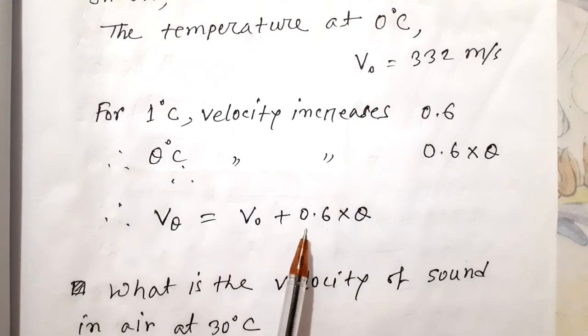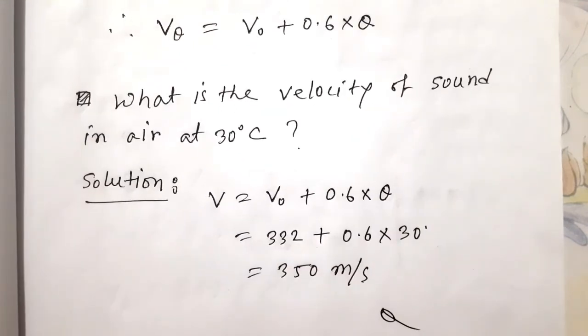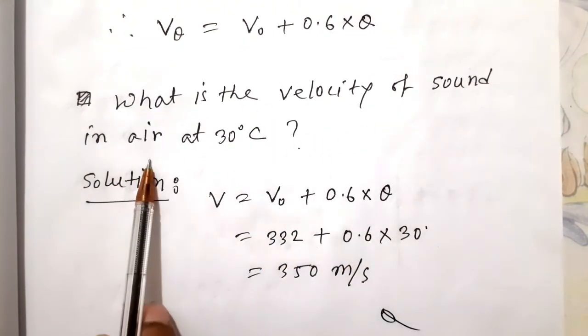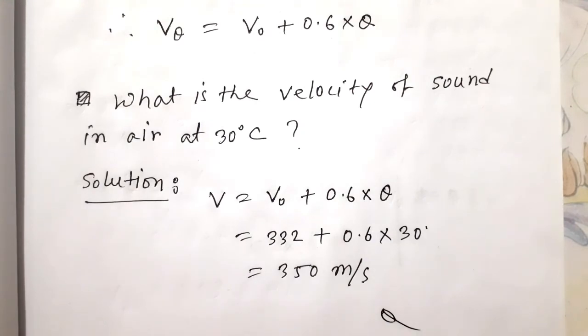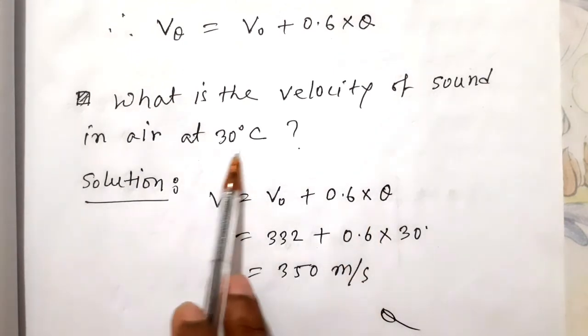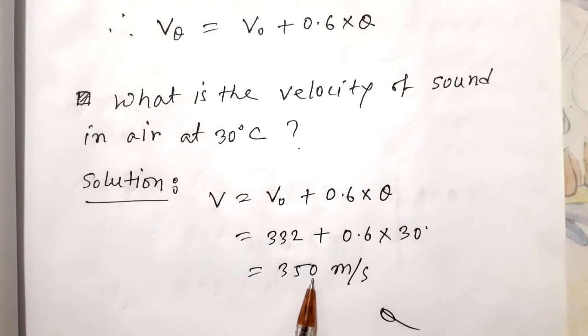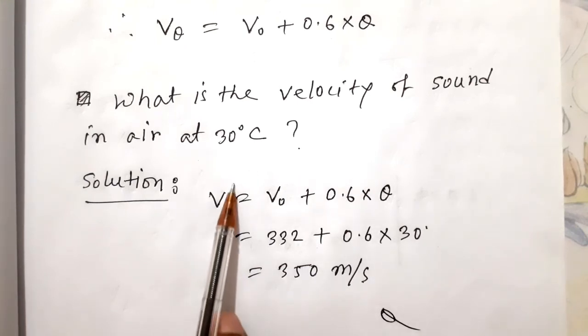What is the velocity of sound in air at 30°C? We use the formula V = V₀ + 0.6θ. V₀ means the sound velocity at 0°C, which is 332 plus 0.6 × 30 equals 350 m/s. So the sound velocity at 30°C is 350 m/s.